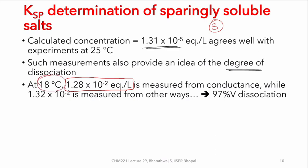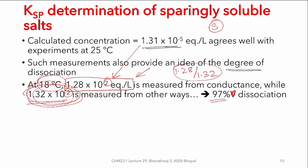For AgCl at 18°C, conductance measurements give something like 1.28 × 10⁻² equivalents per liter. Realize that from 25°C to 18°C the solubility reduces; as you increase temperature, solubility will be more. When a similar measurement is done for the same solution using other methods, one gets 1.32 × 10⁻² equivalents per liter. Dividing 1.28 by 1.32, one can realize there is about 97% dissociation of AgCl into Ag⁺ and Cl⁻, while the remaining ~3% remains as AgCl or some other non-conducting species.